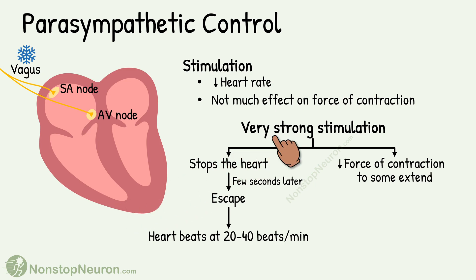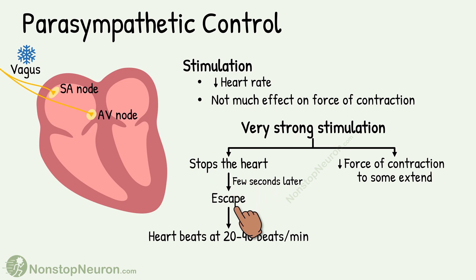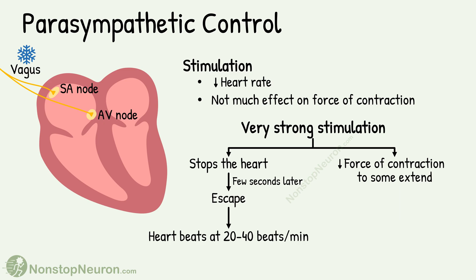Very strong stimulation of the vagus nerve can completely stop the heart. However, after a few seconds, the heart escapes from this effect and starts beating at a lower rate of 20–40 beats per minute. Apart from the effect on heart rate, very strong stimulation can also decrease the force of contraction to some extent.